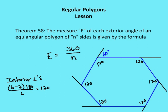That brings us to Theorem 58. The measure E of each exterior angle of an equiangular polygon of N sides is given by the formula. The sum of all the measures of the exterior angles in a polygon is equal to 360 degrees. We can figure out the value of each exterior angle by taking 360 degrees and dividing it by the number of sides. So the formula is E equals 360 degrees divided by N.